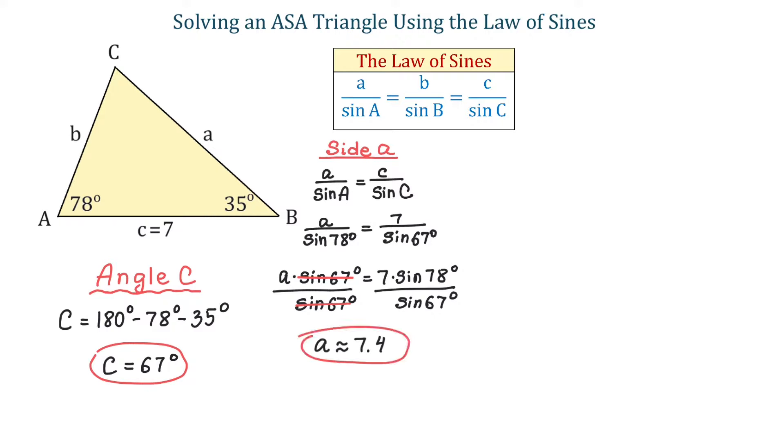Now, in the last step, we will find side B. This time, we will use B over sine of angle B and we can use again C over sine of angle C. So, B over sine of B equals C over sine of C.